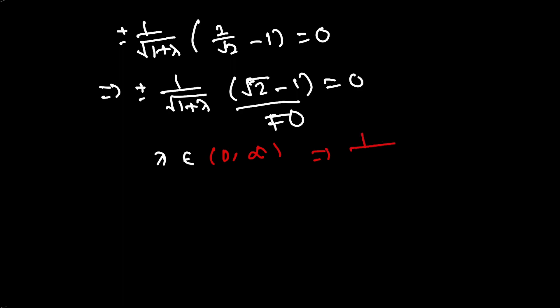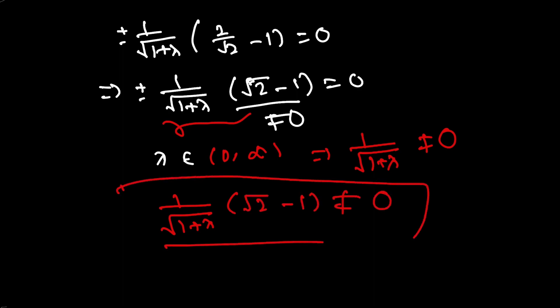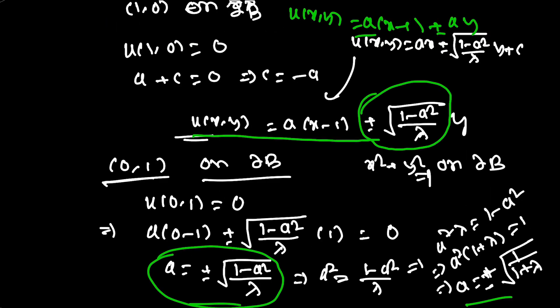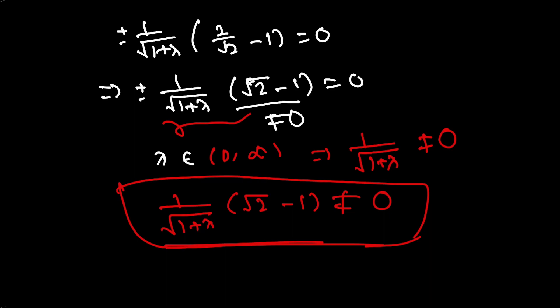But since λ belongs to (0, ∞), λ is a finite number, so √(1/(1 + λ)) ≠ 0. Also (2/√2 − 1) = (√2 − 1) ≠ 0. So the expression is not equal to 0, giving a contradiction. Therefore the solution does not exist for this boundary condition.